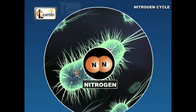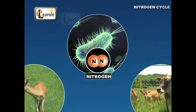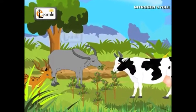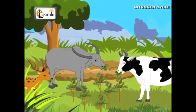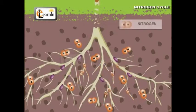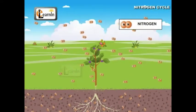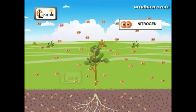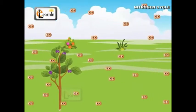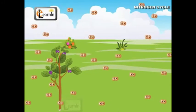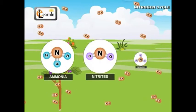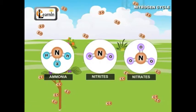Nitrogen is one of the most important constituents of all living organisms, from bacteria to humans. Animals obtain a large amount of nitrogen by eating plants and other animals. However, plants obtain nitrogen from either the soil or air. Air has a large amount of nitrogen in its elemental form, but plants cannot use it in that form, so nitrogen must be converted to nitrogen-containing compounds such as ammonia, nitrites, and nitrates in order to be used by plants.